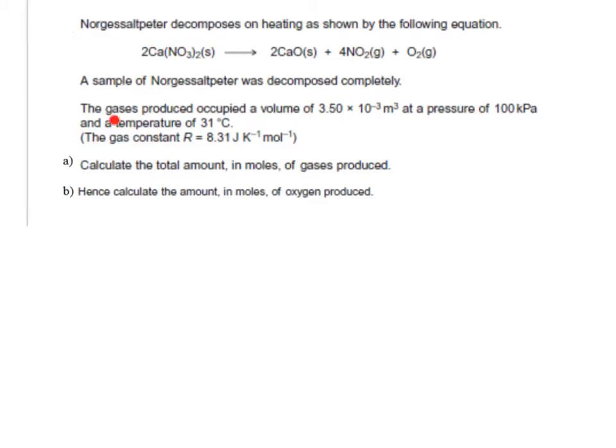It then goes on and says that some gases are produced, and it gives you a volume in meters cubed, a pressure in kilopascals, a temperature in Celsius, and the ideal gas equation. Question A asks you for the total amount in moles of gases produced.